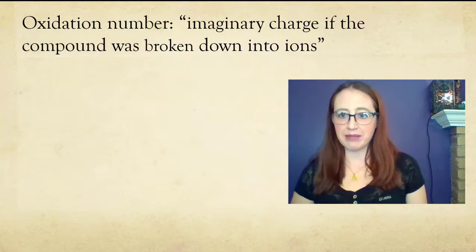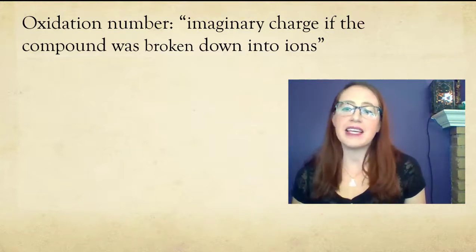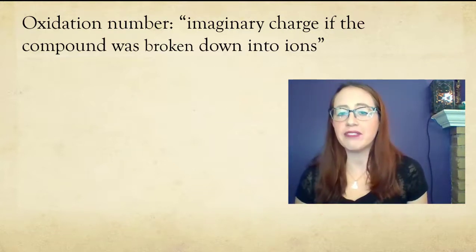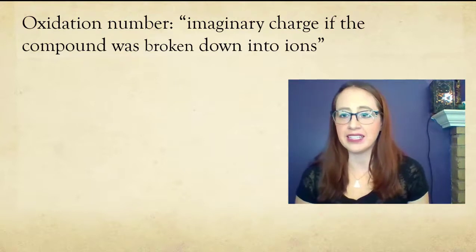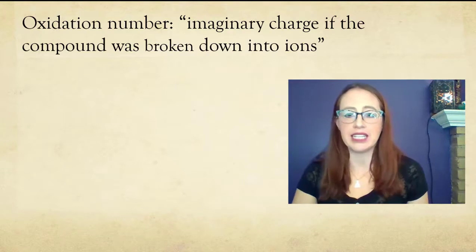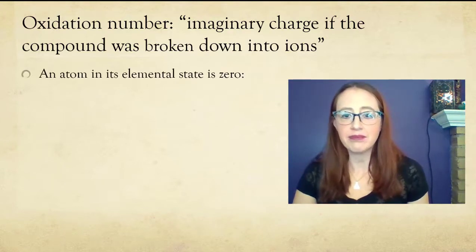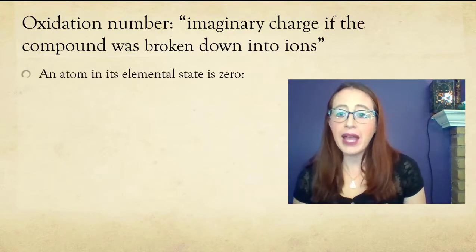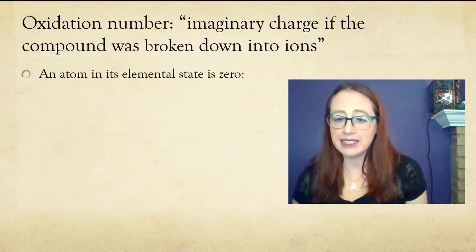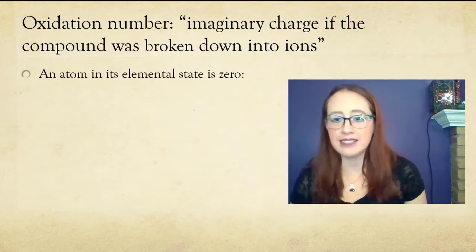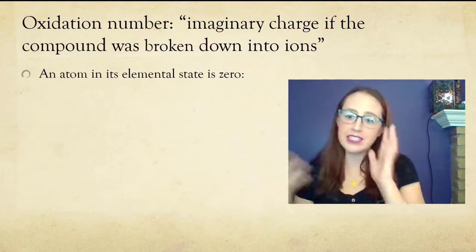Let's start with the oxidation number. This is like an imaginary charge that would occur if you did break the species down into ions. We can calculate this for all species, even if they don't actually break down into ions. If we have an atom in its elemental state, which includes our diatomic gases, then that oxidation number is zero.